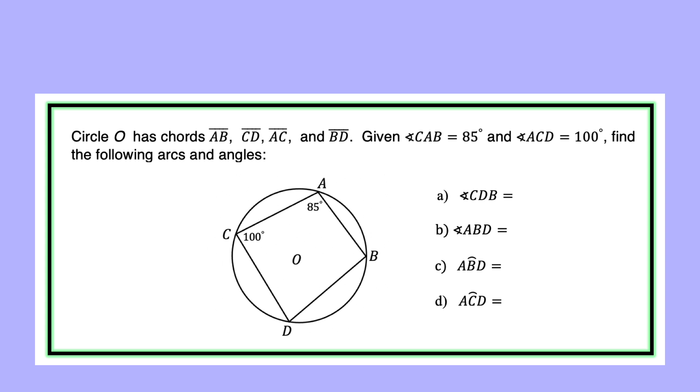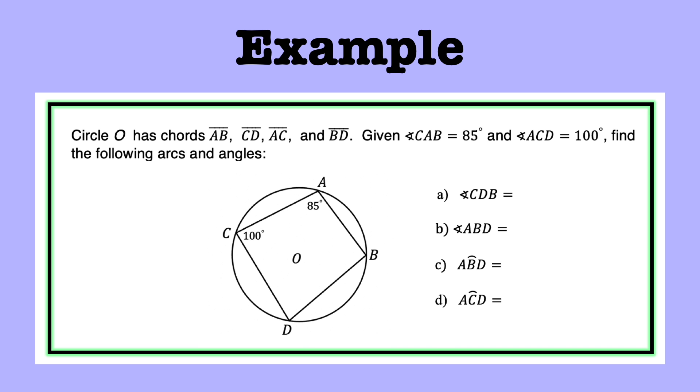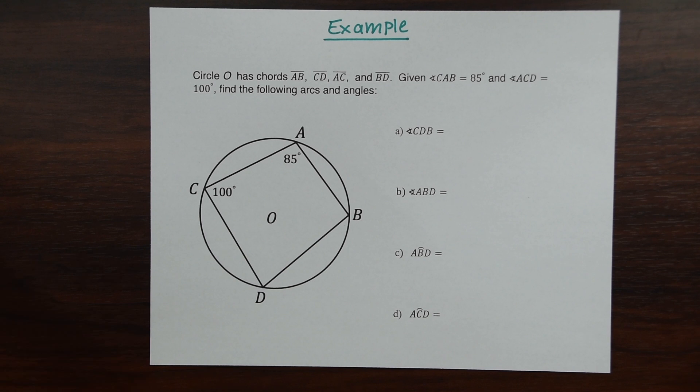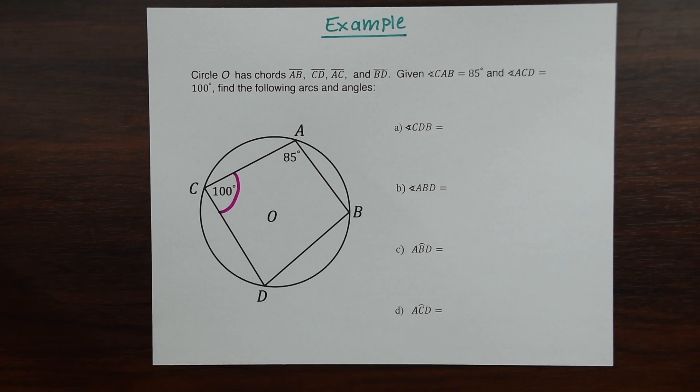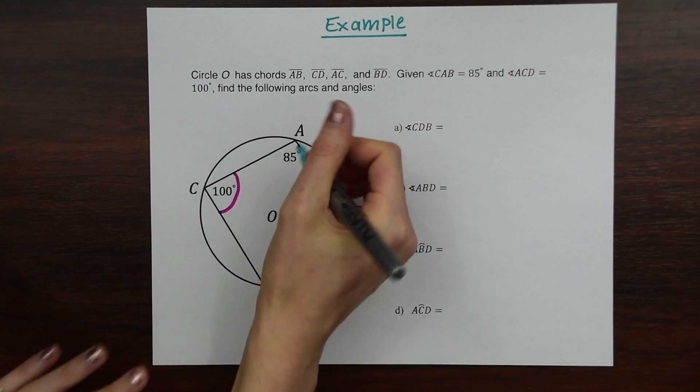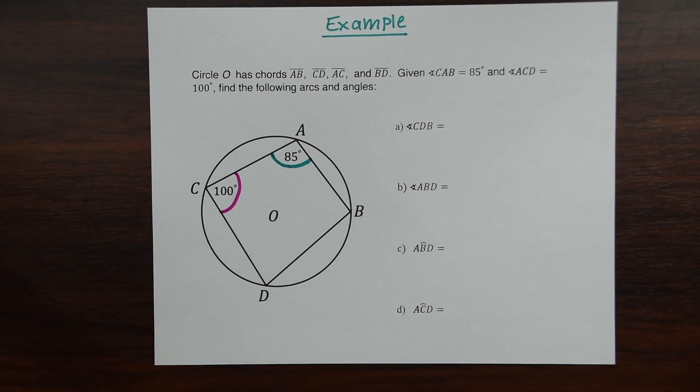We have this example here. Circle O has chords AB, CD, AC, and BD. Given angle CAB equals 85 degrees and angle ACD equals 100 degrees, find the following arcs and angles. So right away they already drew this stuff for us. We have 100 degrees here and we have 85 degrees here. Now let's see what we need to find.